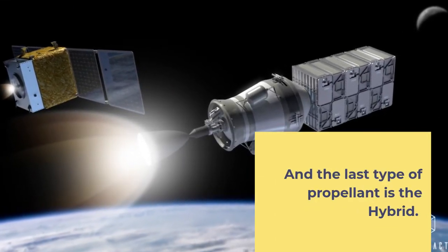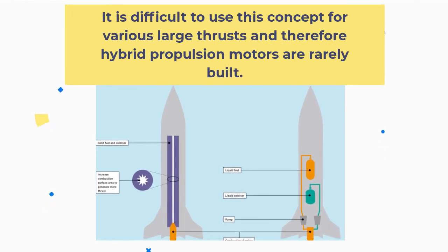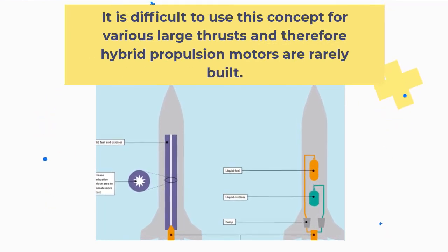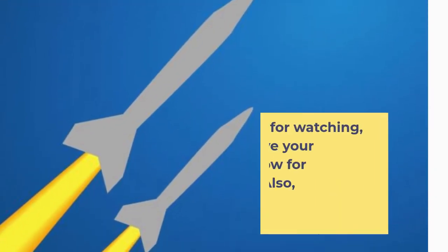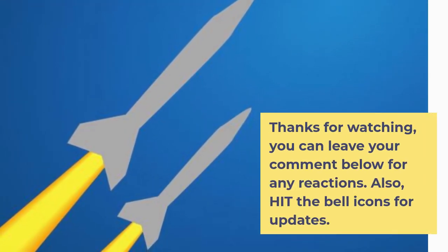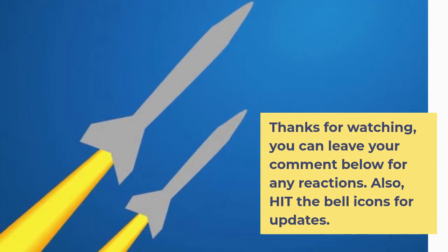And the last type of propellant is the hybrid. It is difficult to use this concept for various large thrusts and therefore hybrid propulsion motors are rarely built. Thanks for watching. You can leave your comment below for any reactions. Also hit the bell icon for updates.